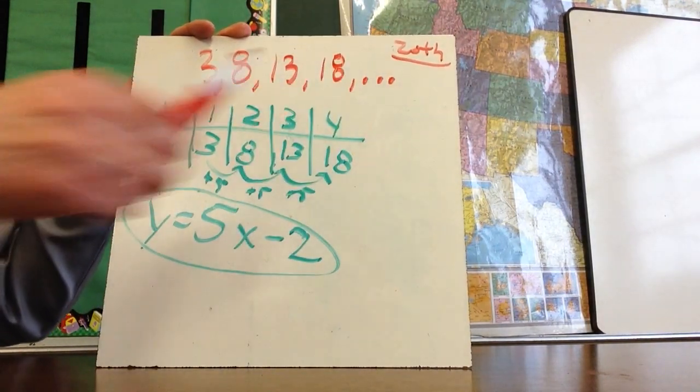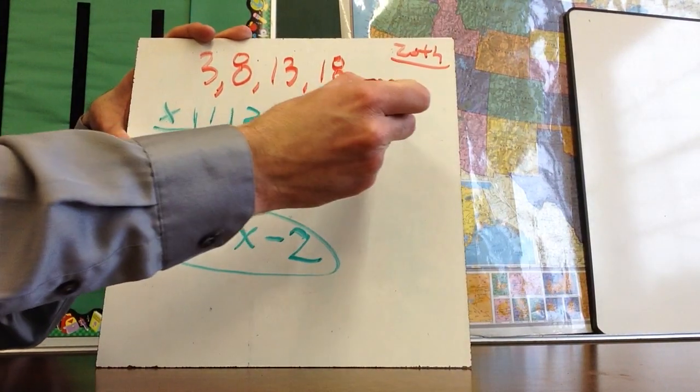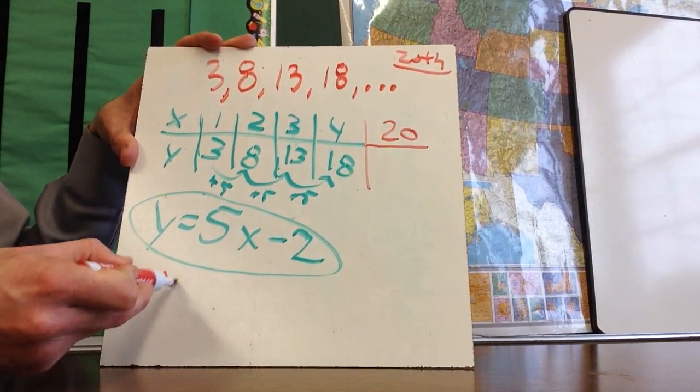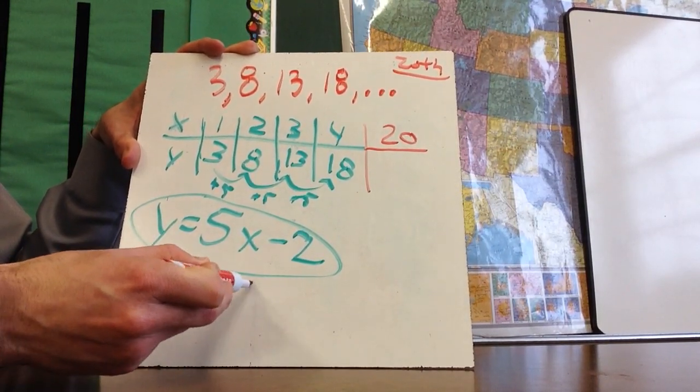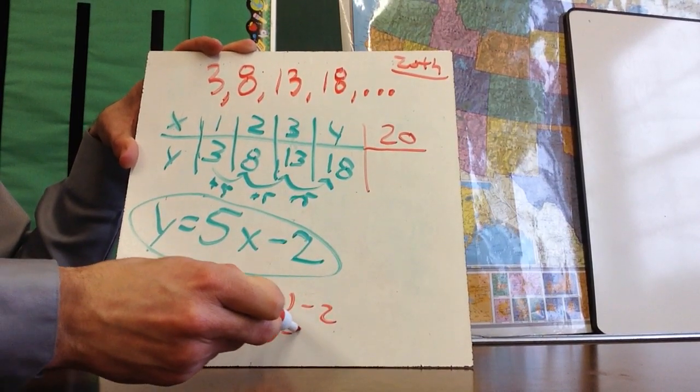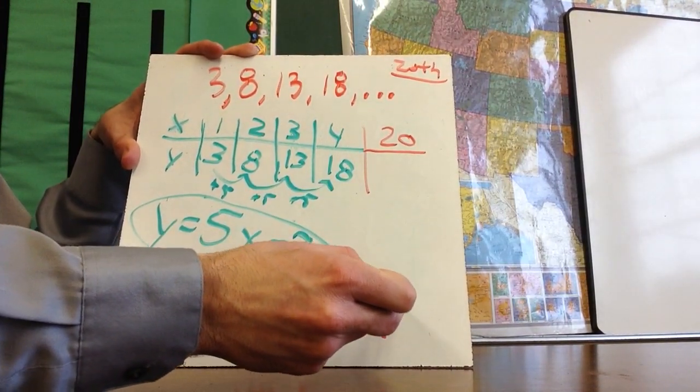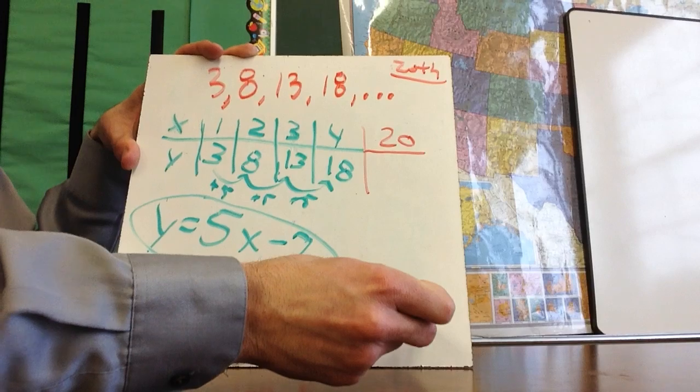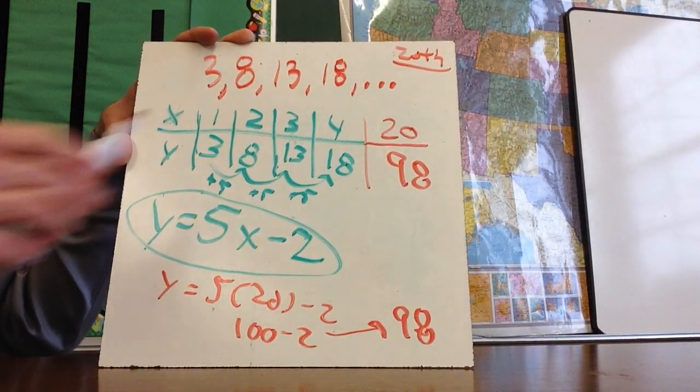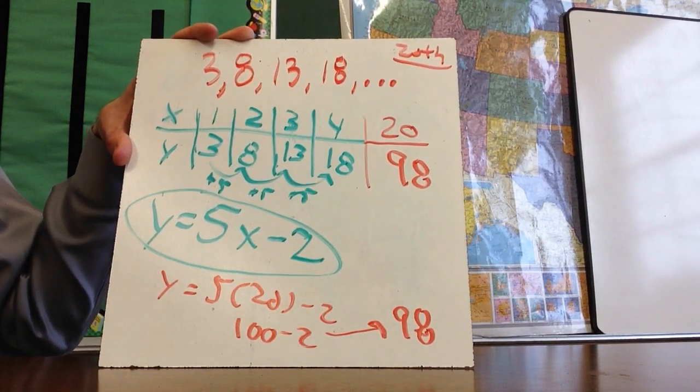Now, let's not forget this time. We're going to find the 20th term. If I want to find the 20th term, that just means that I want to see what is Y when X is 20. Well, now I have a formula. So I'm going to go Y equals five times 20 minus two. This is 100 minus two. So that means that this is going to be 98. So the 20th term, if I were to take this all the way out to the 20th term, the number would be 98.